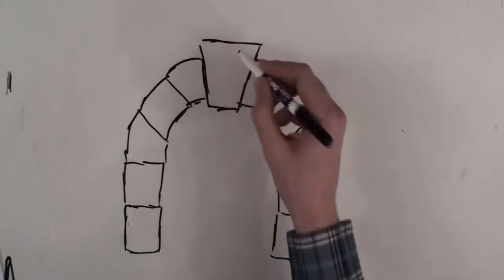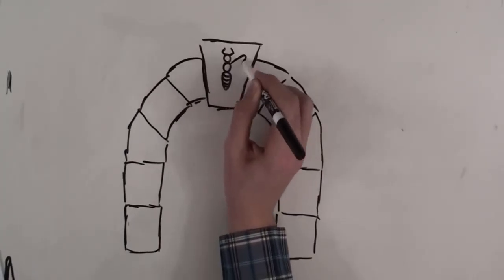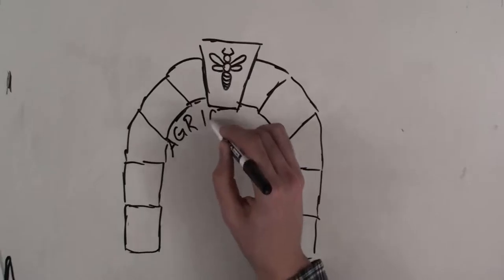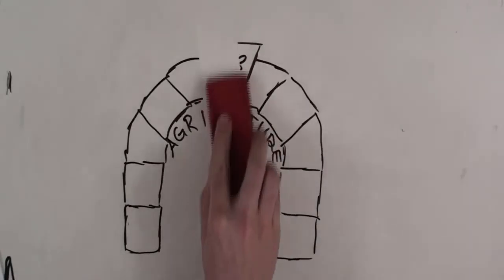This process makes bees the keystone of our agriculture. If bees disappear, the whole industry could fall apart, and they are disappearing.